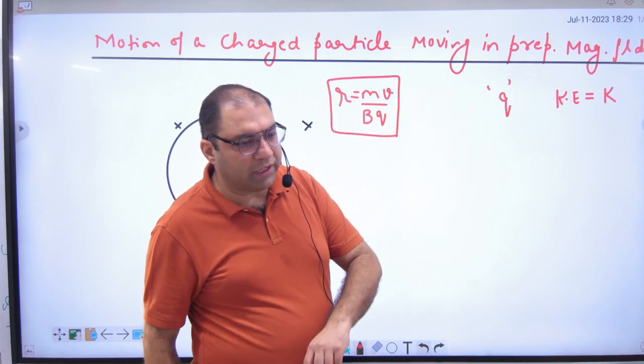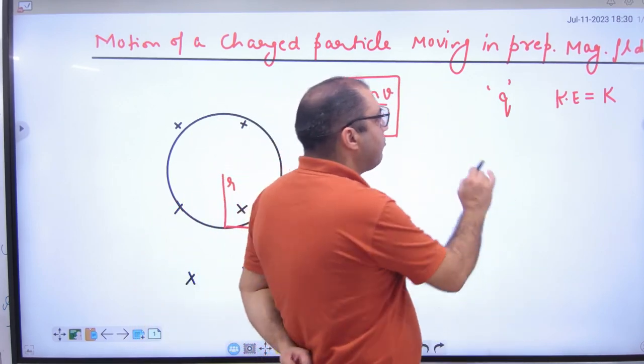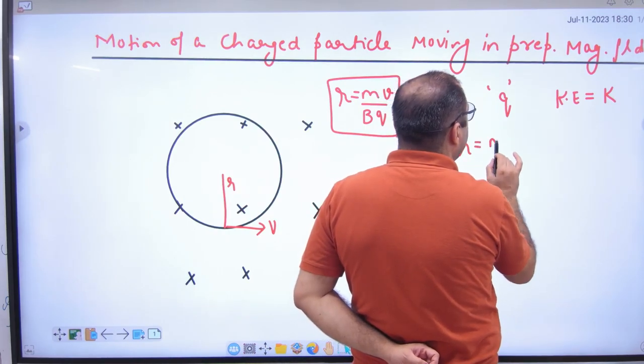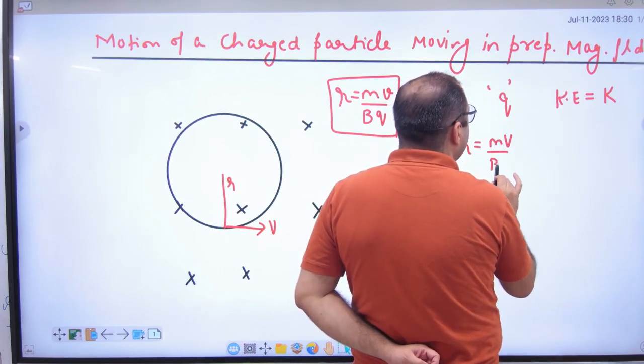So instead of velocity, you are given kinetic energy K, and you need to find the radius in the magnetic field. The formula requires velocity, so what will you do?